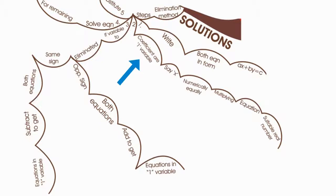Step three: If the variable to be eliminated has the same sign in both equations, subtract one equation from the other to get an equation in one variable.